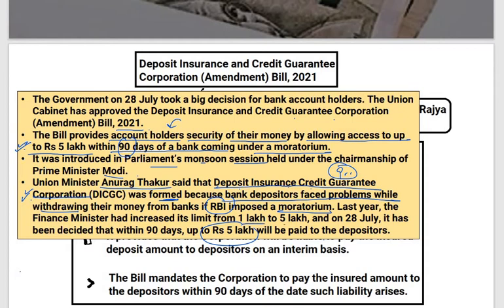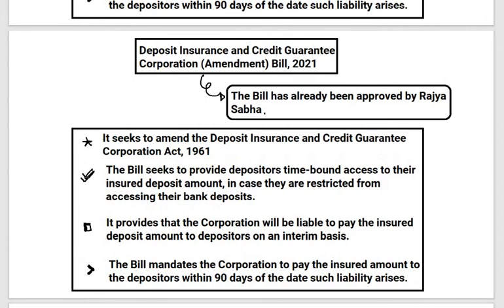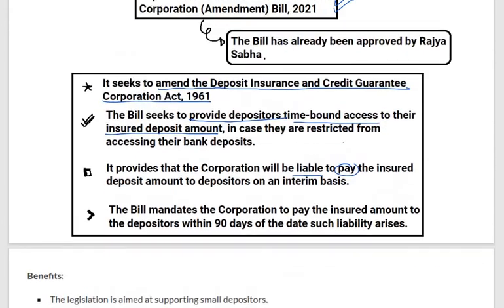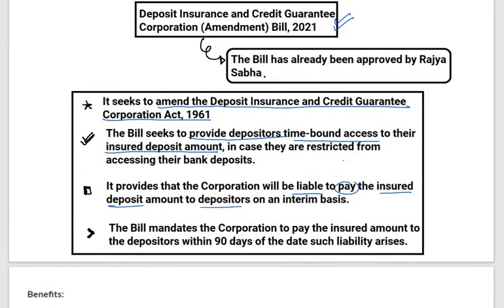Earlier the limit was 1 lakh; now it is 5 lakhs. The Deposit Insurance and Credit Guarantee Corporation Amendment Bill 2021 has already been approved by Rajya Sabha. It seeks to amend the Deposit Insurance and Credit Guarantee Corporation Act of 1961. It will provide depositors a time-bound access to their insured deposit money — 5 lakhs is insured. If there is a moratorium on the bank, you can withdraw up to 5 lakhs. That amount is insured against any vulnerability the bank faces. The corporation — DICGC — will be liable to pay the insured deposit amount to depositors on an interim basis.